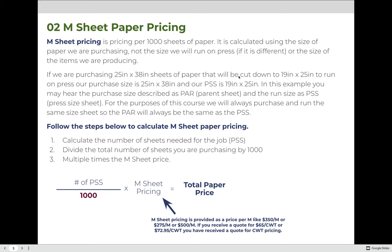The purchase size may be described as the parent sheet, and the run size as the PSS — the press sheet size. For the purposes of this course, to keep things simple, we will always purchase the same size paper that we are going to run on press, so our parent sheet is always the same as our press sheet. But you should be aware that you don't always have to run the same size paper you purchase through your press.